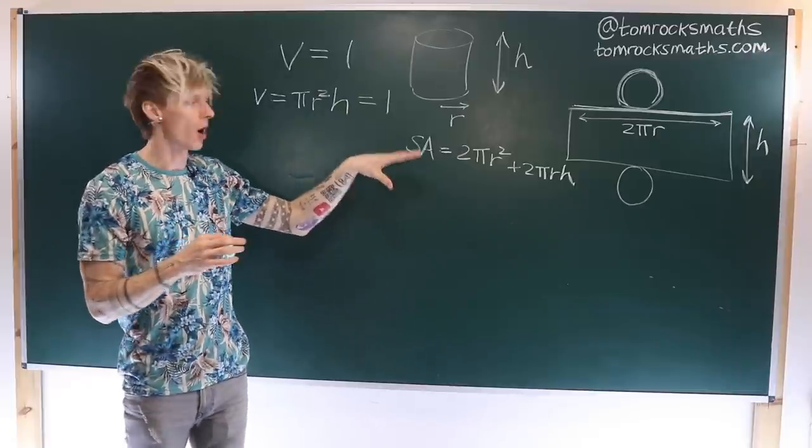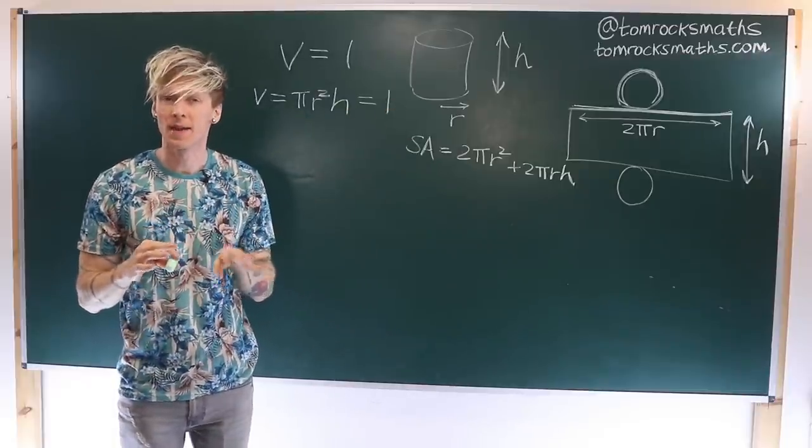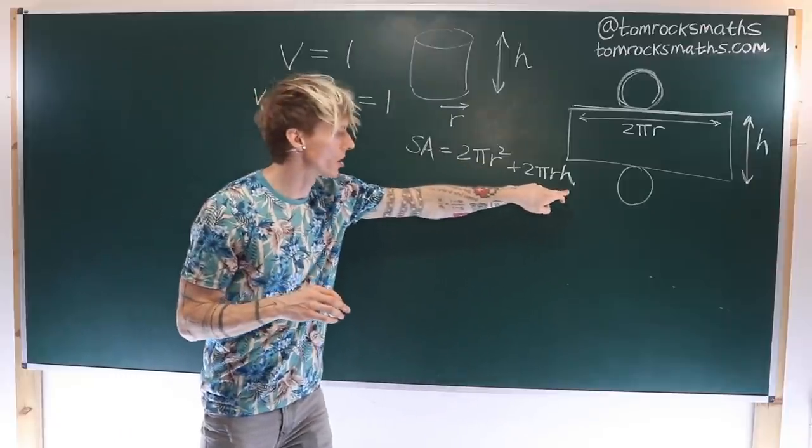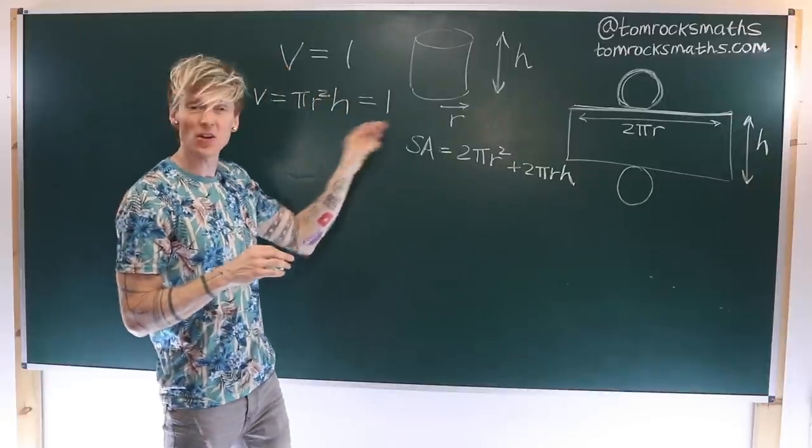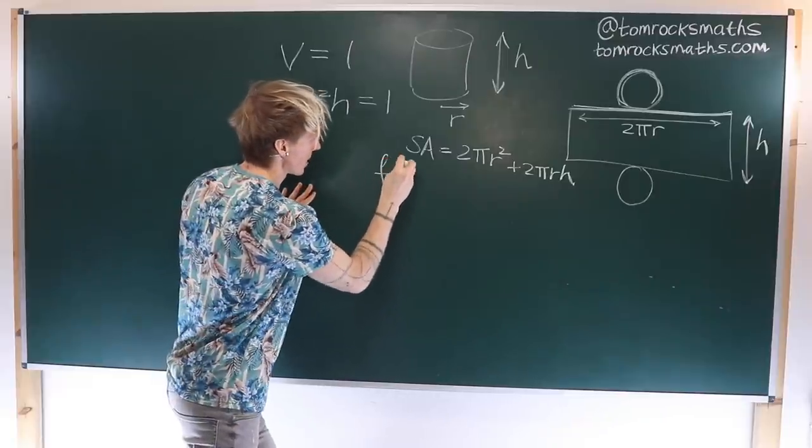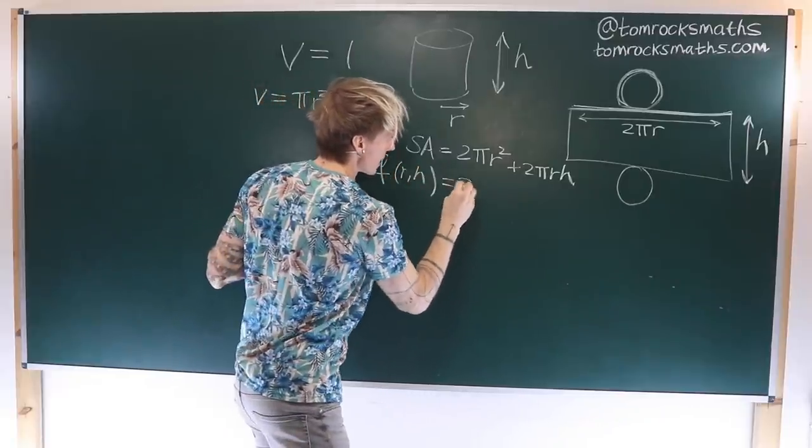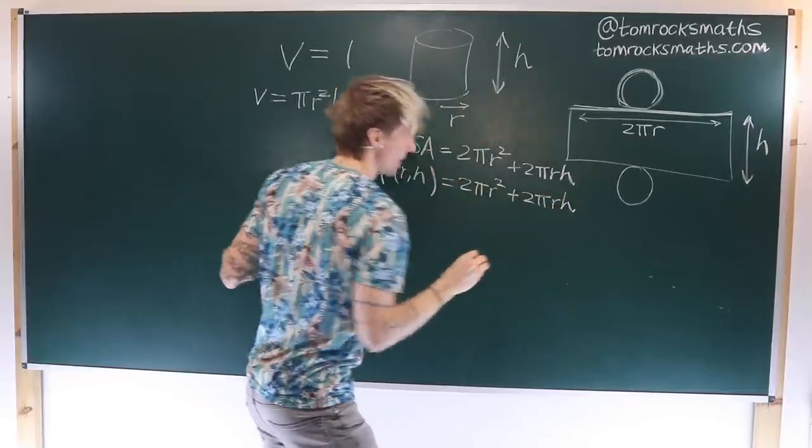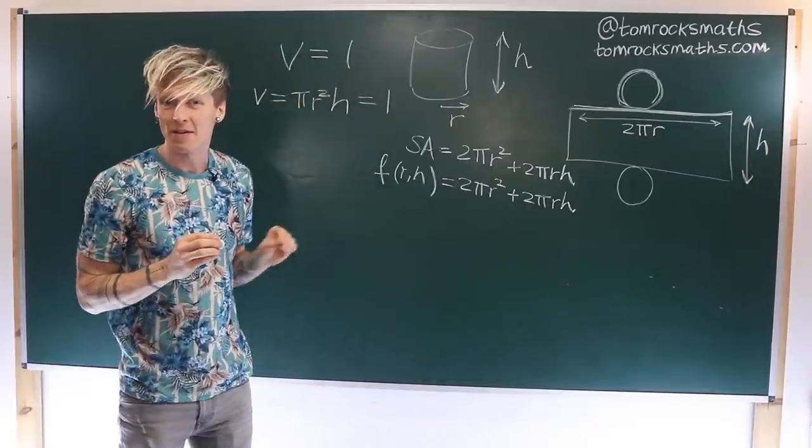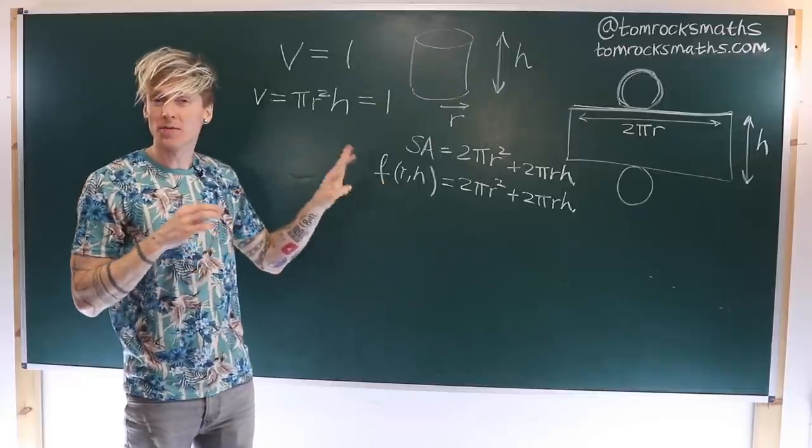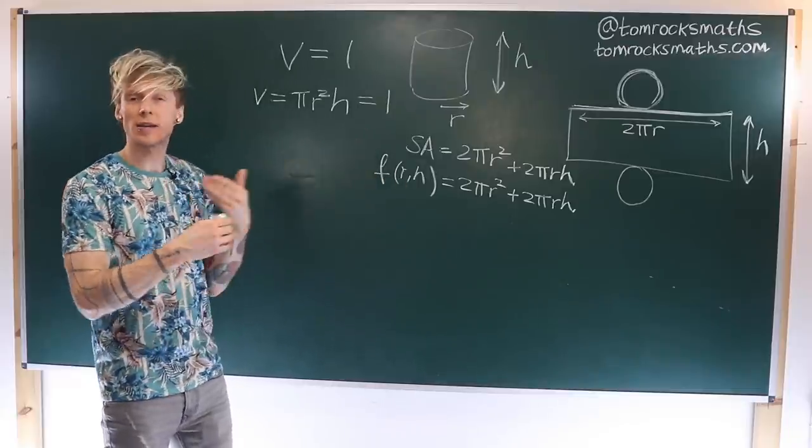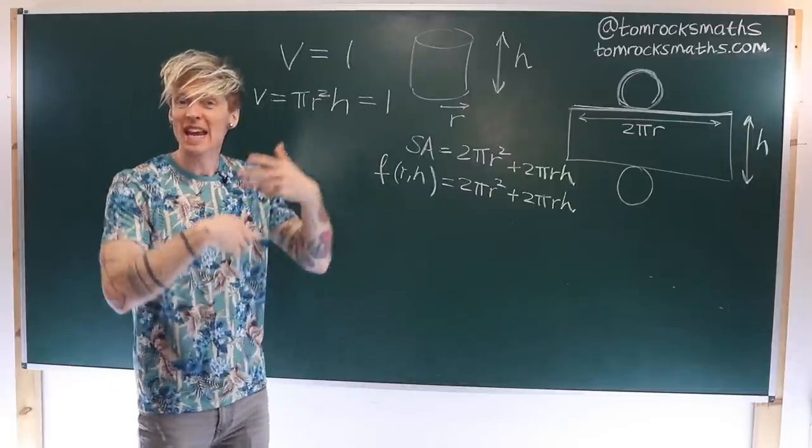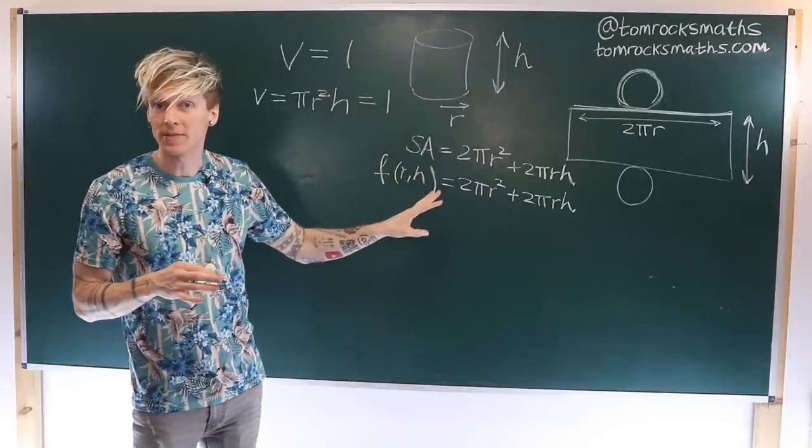So we have the formula of the quantity that we're trying to minimize, but at the moment we have an unknown radius r and an unknown height h. So this function, let's call it f, it's a function of r and h given by 2πr² + 2πrh. And what we want to do is minimize f. Now at the moment it's a function of two variables, so we could try some kind of partial differentiation perhaps, differentiating with respect to r and h individually and trying to find a critical point. However,